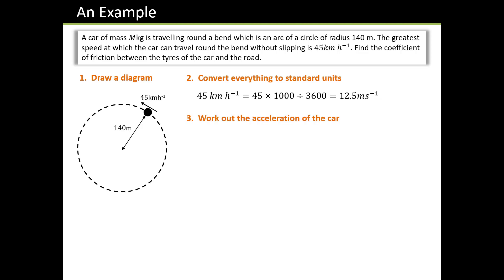Next, we work out the acceleration of the car. That's quite easy because we've got a formula for that. It's just v², 12.5 squared over r, 140 meters. There you are. I'm not working out the answer to that sum yet because it's going to be some horrible decimal. I'm just going to leave it as 12.5 squared over 140.